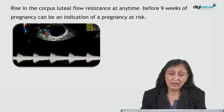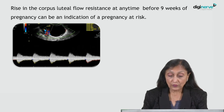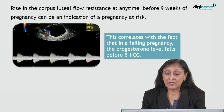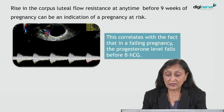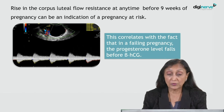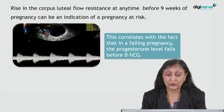Rise in corpus luteal flow resistance at any time after conception and before nine weeks of pregnancy can be an indication of a pregnancy at risk. This correlates with the fact that in a failing pregnancy, the progesterone levels fall before the beta-HCG falls.